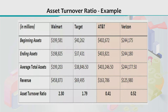You can see that AT&T and Verizon have values smaller than 1. As I mentioned, when we talk about telecommunication or cellular companies, they must purchase very expensive, high-tech machinery and infrastructure, which means their total assets value is very large. If you compare the average total assets of AT&T and Verizon to those of Target, you will see a large difference. That is the basic reason their asset turnover ratios are below 1.